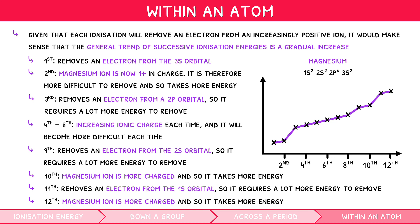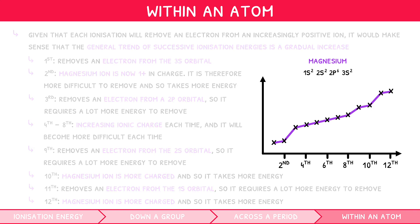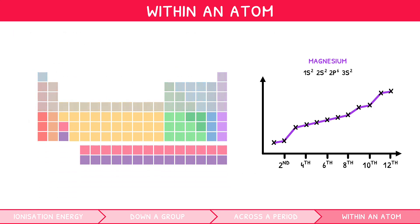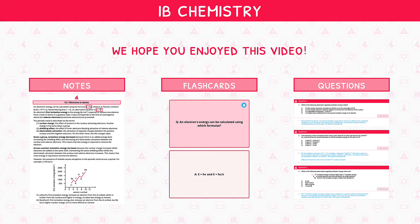Whilst this may seem complicated at first, once you have a solid understanding of orbitals and their energy levels, this should become clear. You need to be confident describing the trends in successive ionization energies for any element up to the end of period 4. For more practice, check out our Chemistry Topic 12 question pages. We hope you enjoyed this video — check out our notes, flashcards, and questions on our website to reinforce your understanding.